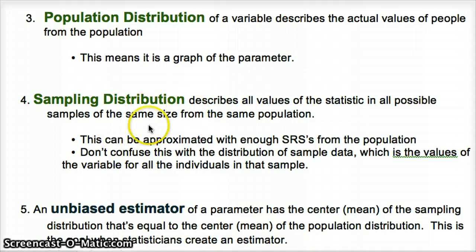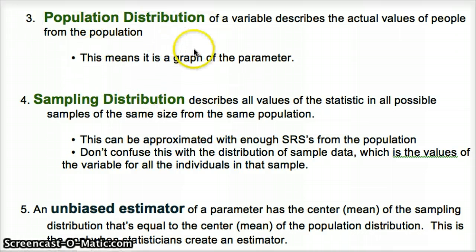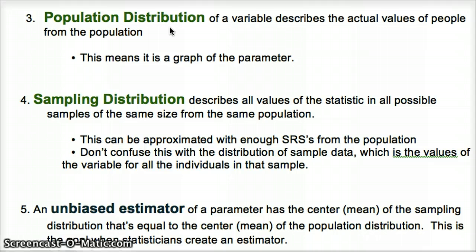A sampling distribution uses all possible samples of a given size n — lowercase n is the number in the sample, capital N is the true population. We usually use the sampling distribution to estimate the population distribution. If we have a large enough sample size, unbiased data, and an unbiased method of gathering data, then we can come up with more reliable methods of estimating the true parameter.